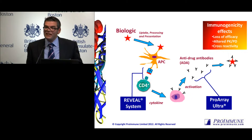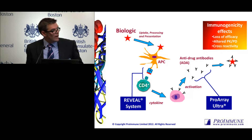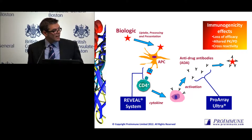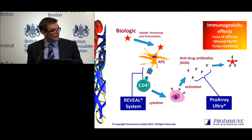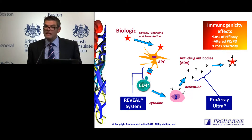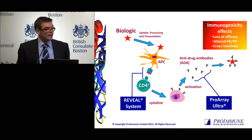Of course, there are quite a lot of things that really complicate this — it's not as simple as that. But ultimately, when activation does occur, proliferation happens, cytokines are produced. This can then go on to provide help to B cells, which, recognising the biologic through surface Ig receptors, will then become activated and themselves produce anti-drug antibodies targeting the therapeutic.